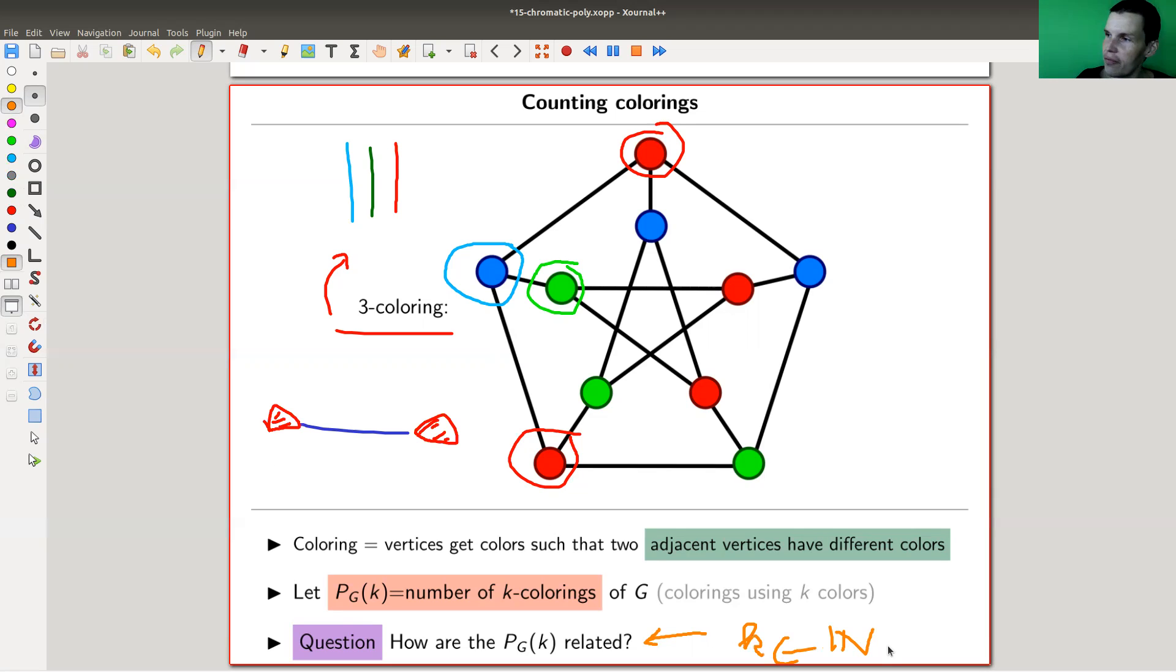and you wonder how they are related, right? So you could plot those if you want. I would do that in a second on a graph, there would be some number of colorings, and you wonder kind of how, what kind of the curve is you can draw through these colors.